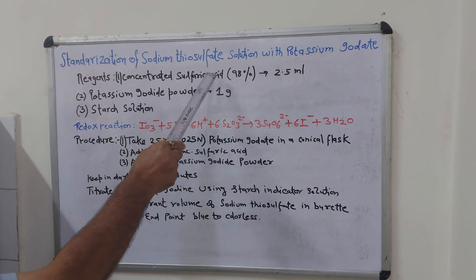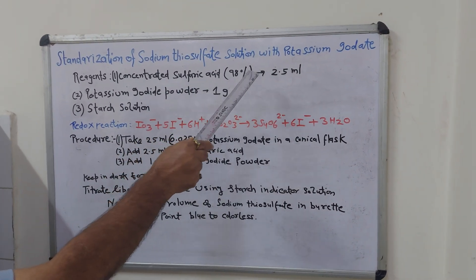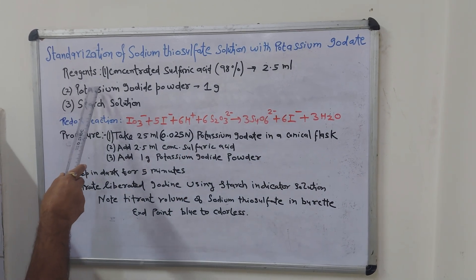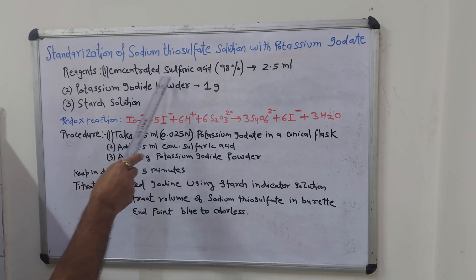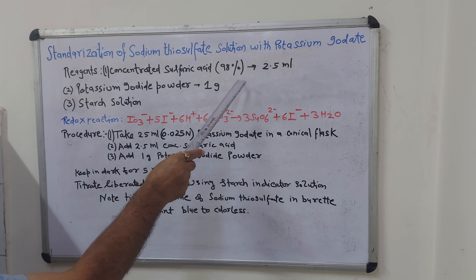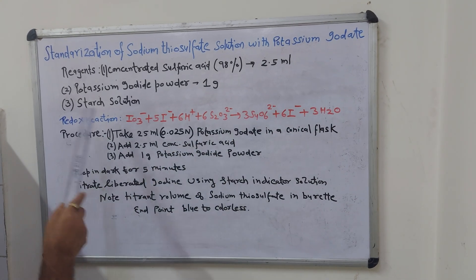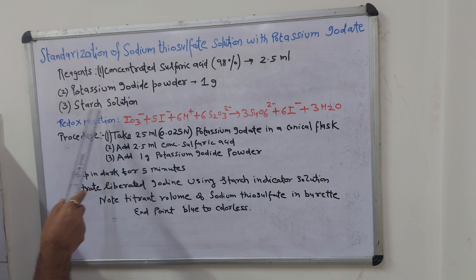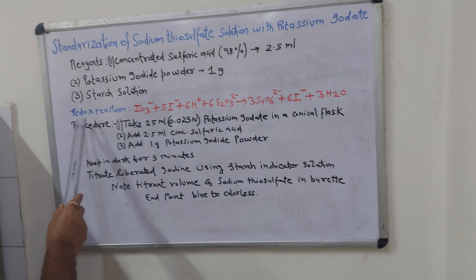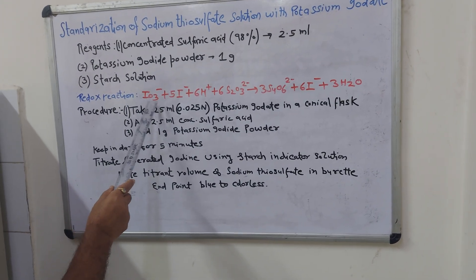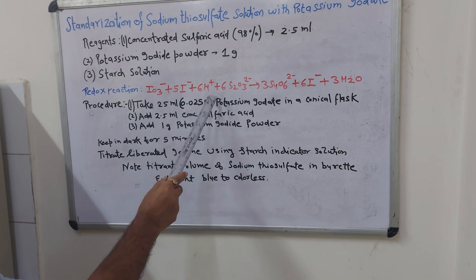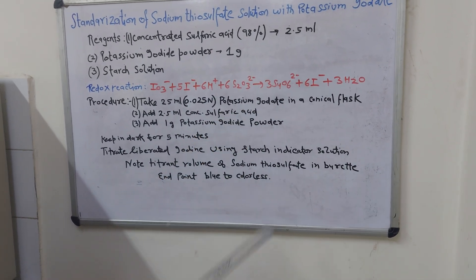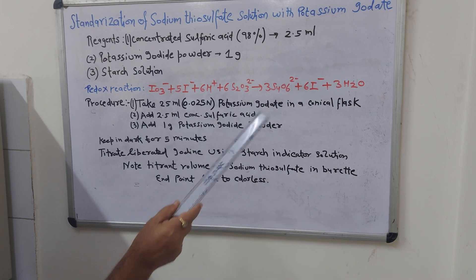Standardization of sodium thiosulfate solution with potassium iodate. Reagents required: concentrated sulfuric acid 98%, 2.5 ml; potassium iodate powder, 1 gram; starch solution. The redox reaction is between sodium thiosulfate and potassium iodate — potassium iodate is the oxidizing agent.